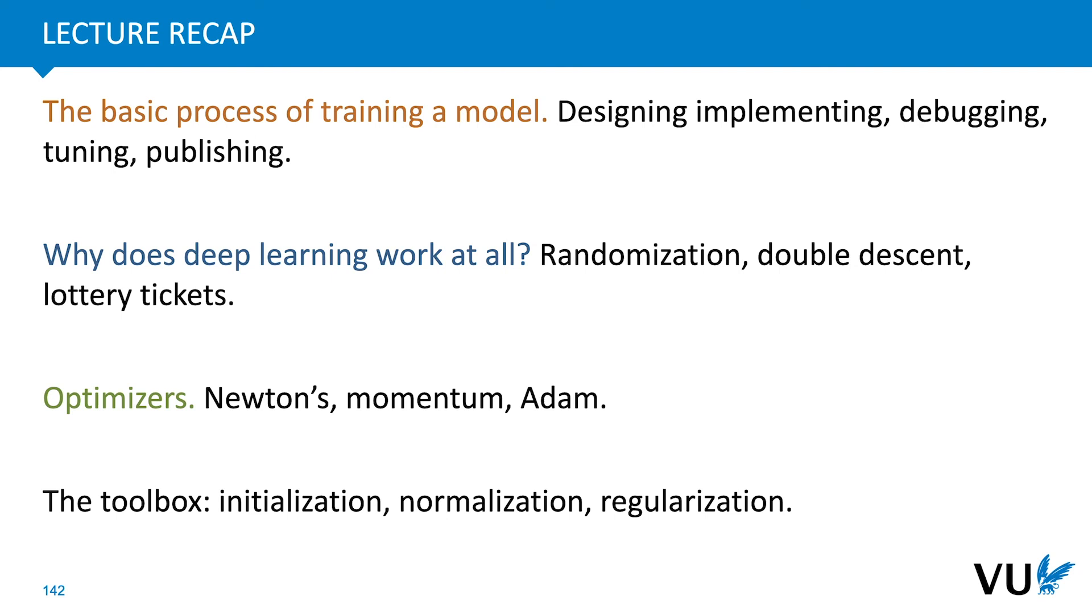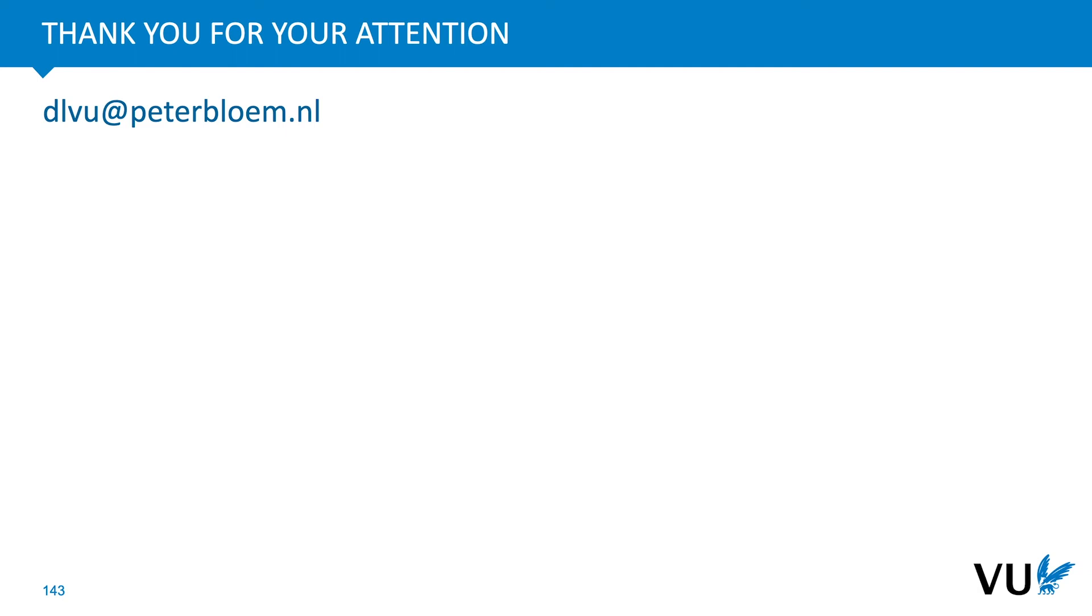That brings us to the end of the lecture. So let's briefly recap what we've talked about. We've looked at the basic process of training a deep learning model: designing, implementing, debugging, tuning, and publishing. We've looked at the deeper question of why any of this works at all. We didn't quite answer it, but we did get some hints from randomization experiments, from double descent, and from the lottery ticket hypothesis. We've looked at optimizers like Newton's method, momentum, and Adam. And we've looked at our toolbox, which contains many different tricks for initialization, normalization, and regularization. Next lecture we're going to be looking at recurrent neural networks and more methods for training on sequential data. But for now thank you for your attention and feel free to email if you have any questions.